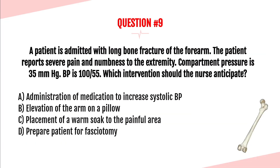Question number nine. A patient is admitted with long bone fracture of the forearm. The patient reports severe pain and numbness to the extremity. Compartment pressure is 35 mmHg and blood pressure is 100/55. Which intervention should the nurse anticipate? A, administration of medication to increase systolic blood pressure; B, elevation of the arm on a pillow; C, placement of a warm soak to the painful area; or D, prepare the patient for fasciotomy?